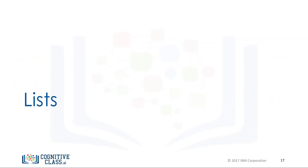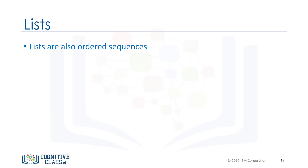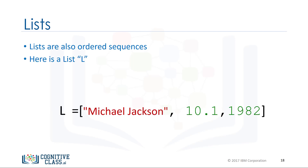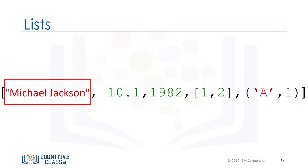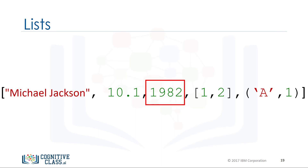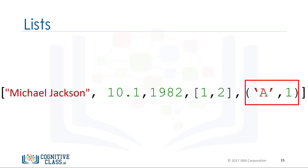Lists are also a popular data structure in Python and are also an ordered sequence. Here is a list L. A list is represented with square brackets. In many respects, lists are like tuples, but one key difference is they are mutable. Lists can contain strings, floats, and integers. We can nest other lists, as well as tuples and other data structures. The same indexing conventions apply for nesting.